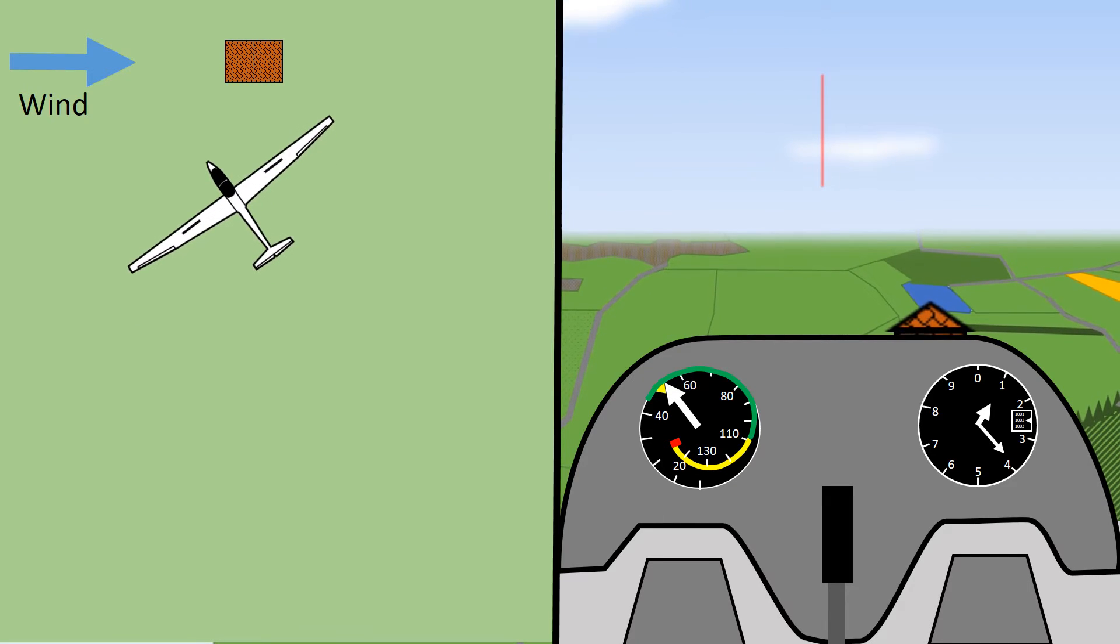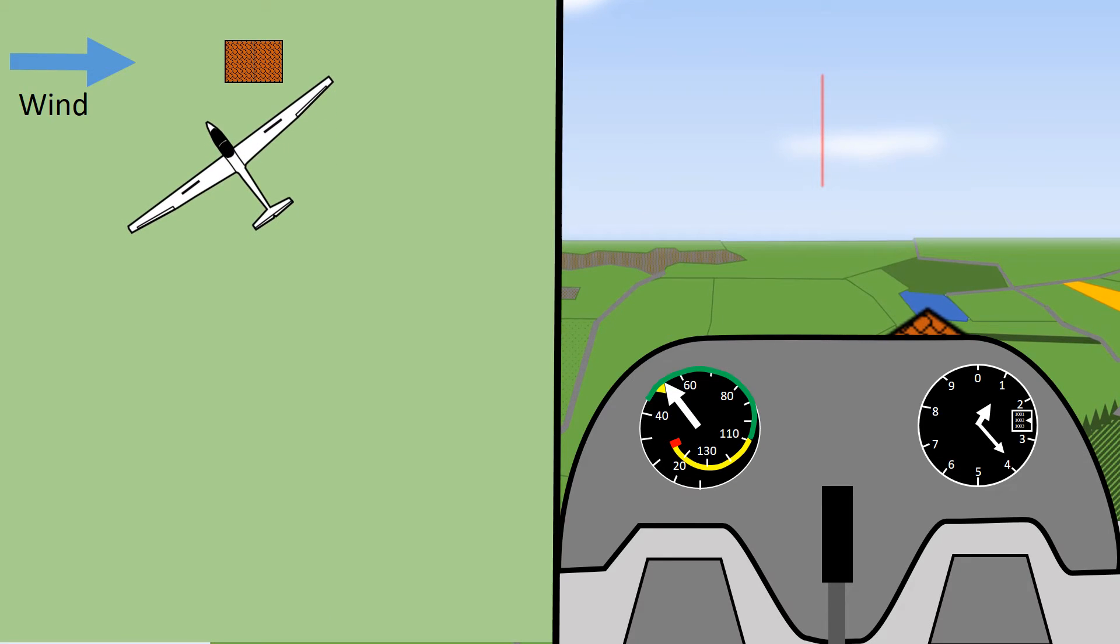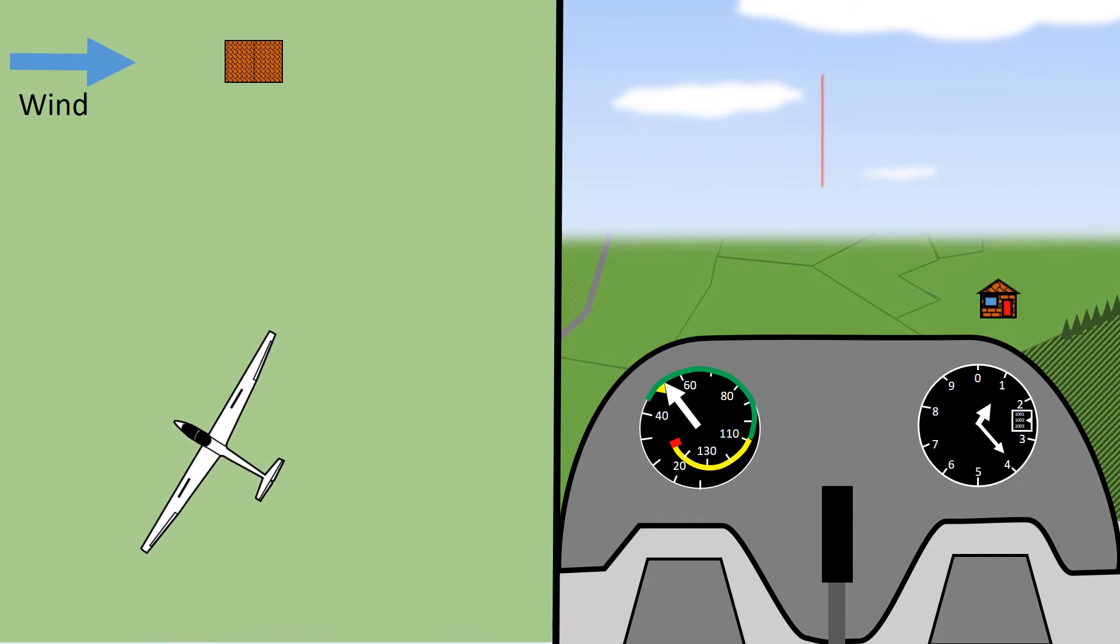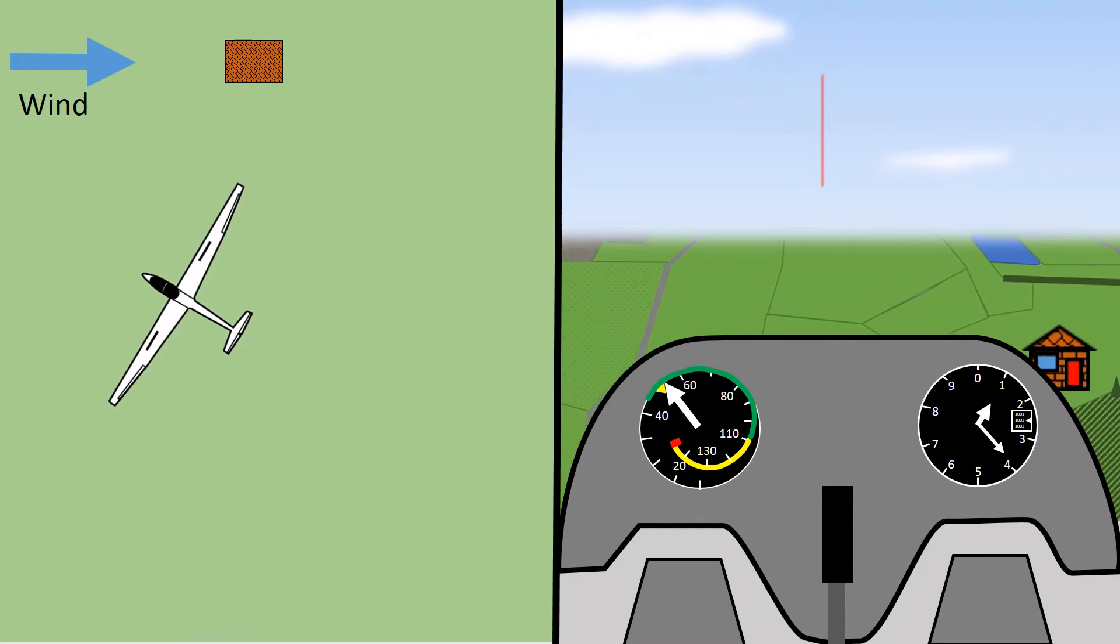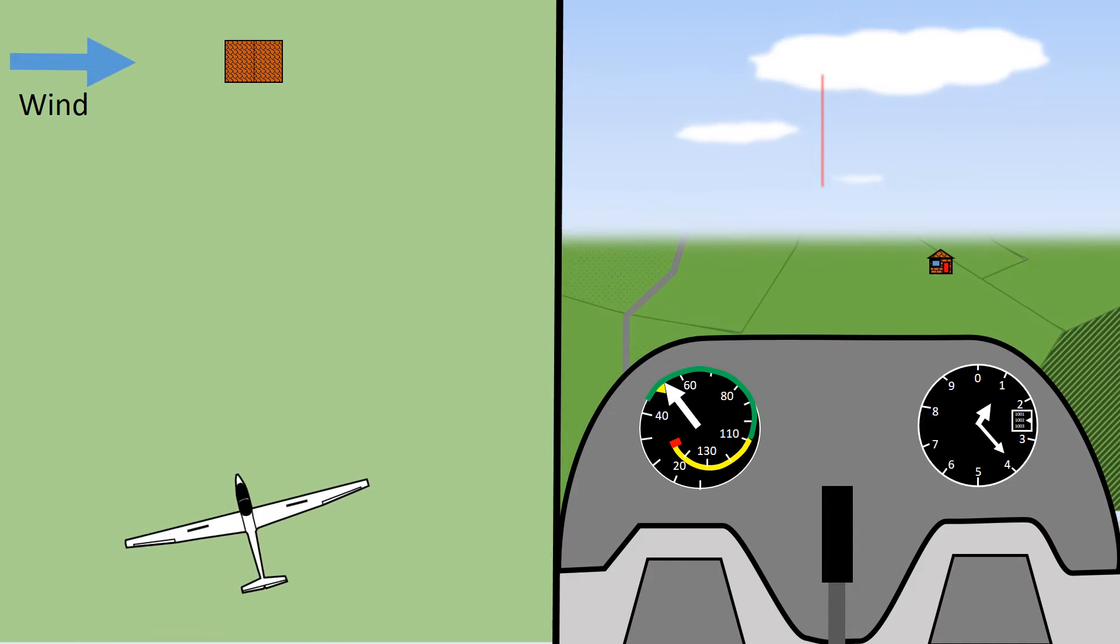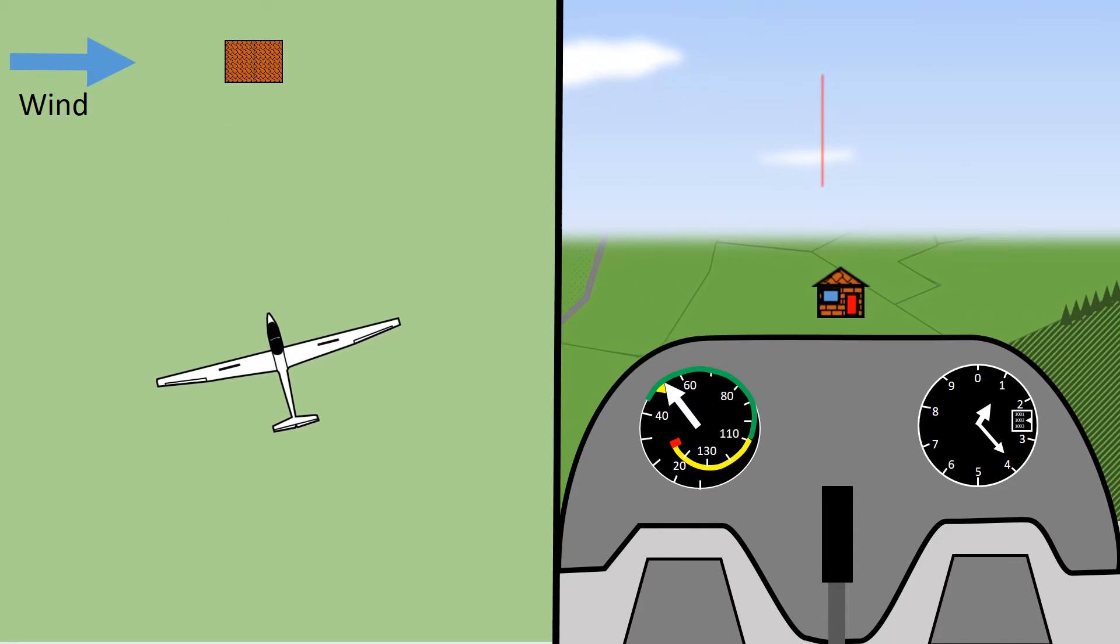Also notice that the glider is not turning, the wings are level and the yaw string is straight. If we turn too much into the wind, then the house will appear to pass behind the glider. Too little and the house passes in front of the glider.